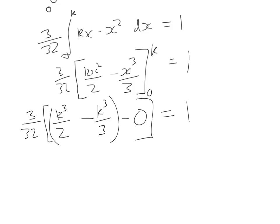Now if we then expand the bracket, we're going to have 3k cubed over 64, and we're going to have 3k cubed over 96 here, and that equals 1.